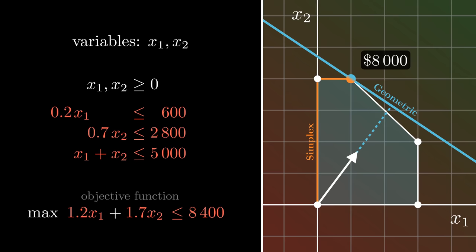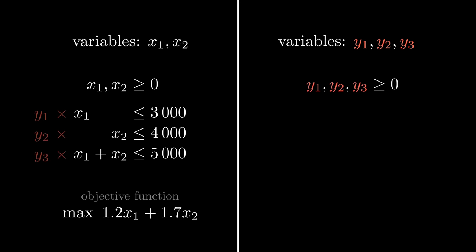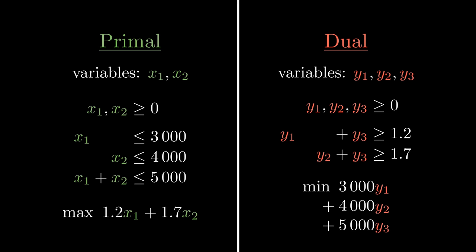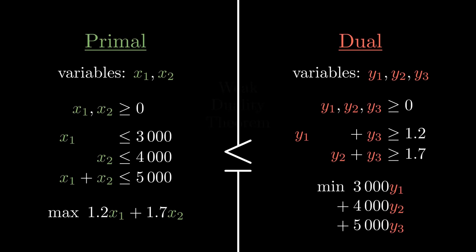This looks promising, so let's formalize and turn these numbers into variables. They have to be non-negative, otherwise the inequality flips, and must be set in such a way that the left side is at least the objective function, since we want to constrain it. Finally, we want to minimize the right side, and we just created a linear program. This is called the dual linear program and is, in my opinion, perhaps the most beautiful thing about linear programming. The dual bounds our original linear program, which we'll call the primal from now on, and vice versa. Solutions to the primal will always be less than or equal to the solutions of the dual, and this is referred to as the weak duality theorem.